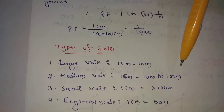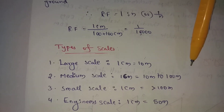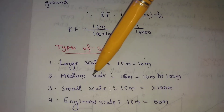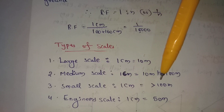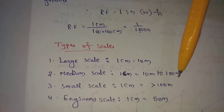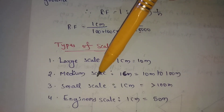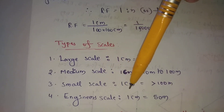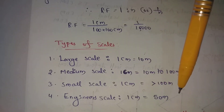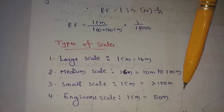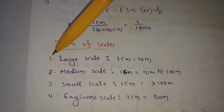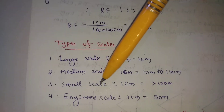For RF greater than 1:10,000, and a scale value equal to 5 meters, the RF is 1:5000 — that is also a large scale. Now, the types of scales we use are: large scale, medium scale, small scale, and Indian scale.